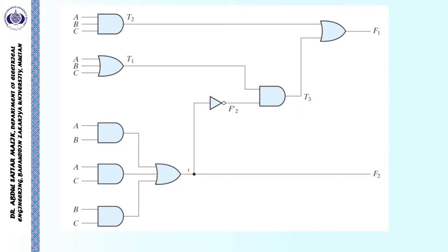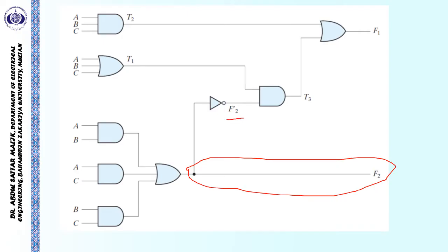For example, the output of this OR gate has been marked directly as F2. The output of this inverter has been marked as F2 dash. The output of this AND gate has been marked as T3. Similarly, the output of this OR gate has been marked as T1, and the output of this AND gate has been marked as T2. And lastly, the output of this OR gate has been marked as F1.